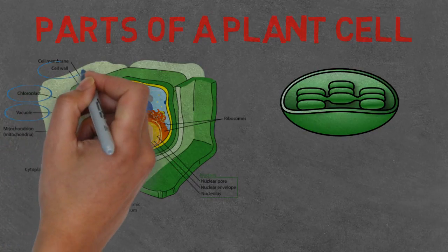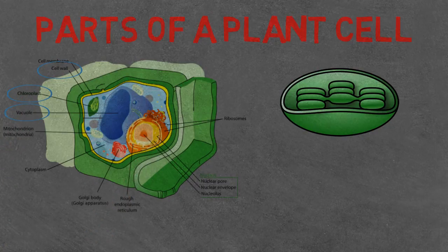The last one is the cell wall. This provides the plant with further structure and protection surrounding the cell membrane.